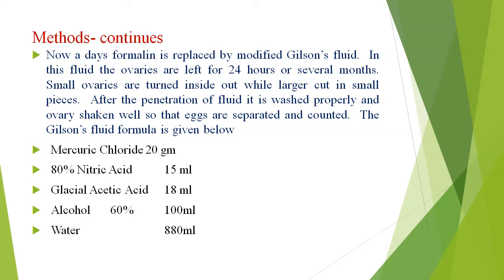Nowadays the formula is replaced by modified Gilson's fluid. In this fluid the ovaries are left for 24 hours or several months. Small ovaries are turned inside out while larger ones are cut into small pieces. After penetration of the fluid, it is washed properly and ovaries shaken well so that the eggs are separated and counted. Gilson's fluid can be prepared using mercury chloride, nitric acid, glycyl acid, alcohol, and water.